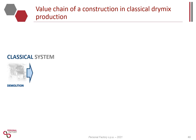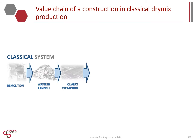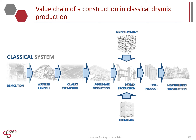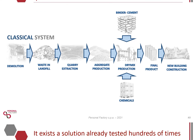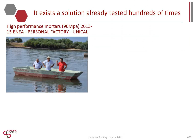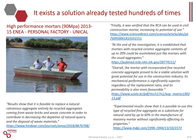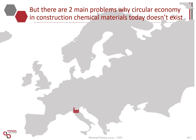Construction and demolition waste goes to landfill, while at the same time we take 90 percent of raw materials from quarries or rivers. Those raw materials are mixed with cement and chemicals to produce ready-to-use dry mix, applied to build constructions again. Yet there are tens of papers and experimental results showing that it is possible to use recycled fine aggregate as a substitute for natural sand.